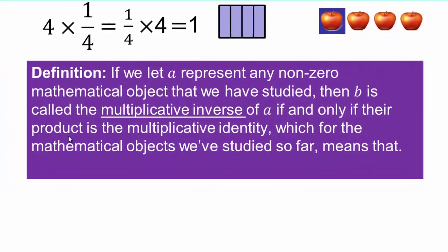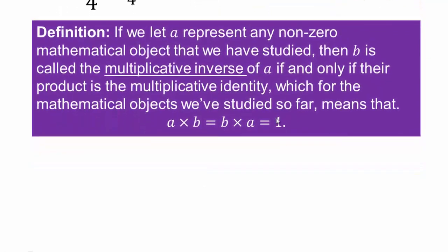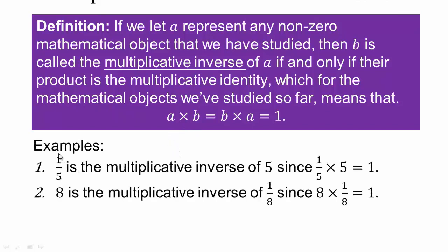For the formal definition: if A is a non-zero mathematical object, then B is the multiplicative inverse of A if and only if their product is the multiplicative identity — meaning they multiply together to give 1. For example, one-fifth times five is 1, so one-fifth is the multiplicative inverse of five, and five is the multiplicative inverse of one-fifth. Similarly, 8 is the multiplicative inverse of one-eighth, since 8 times one-eighth equals 1.